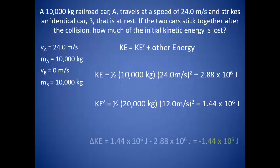Transformed energy is simply delta KE, or the change in kinetic energy. So the final kinetic energy minus the initial kinetic energy gives us a loss of 1.44 times 10 to the sixth joules of energy.